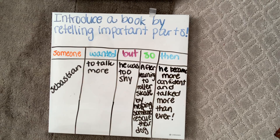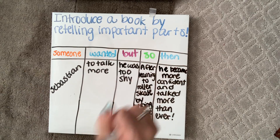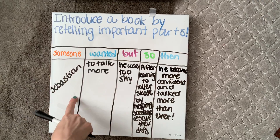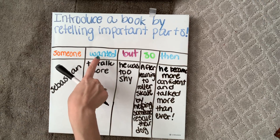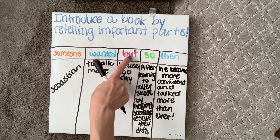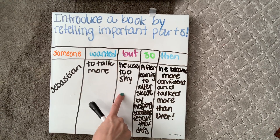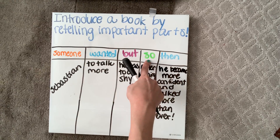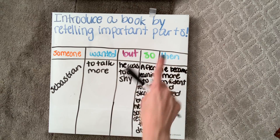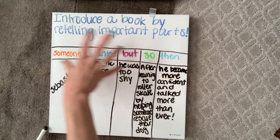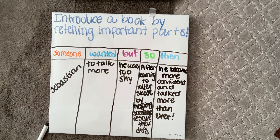So we have retold the important parts of our story. We've introduced our someone — the main character — what they wanted in the story and what they want to accomplish, but their problem and what is getting in the way of their want, so how they are going to solve this problem, and then how did the story end. And to retell it, I'm going to combine all of these elements together.